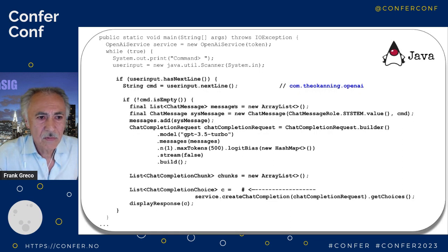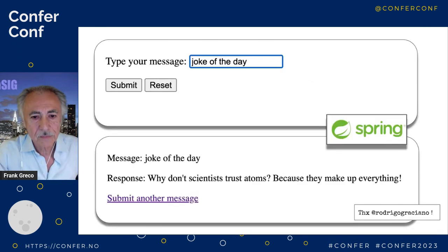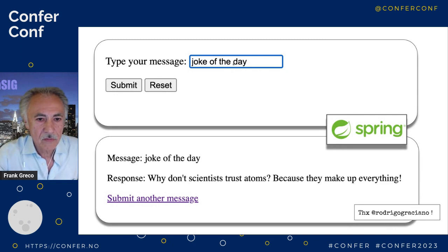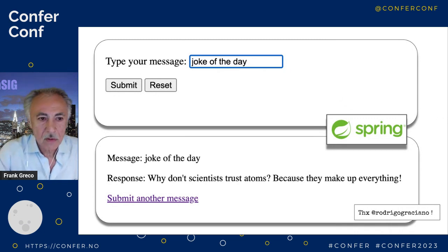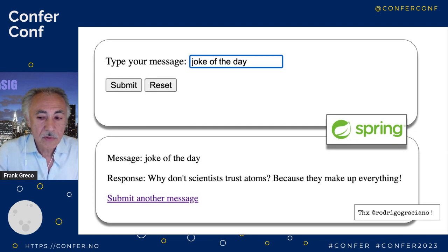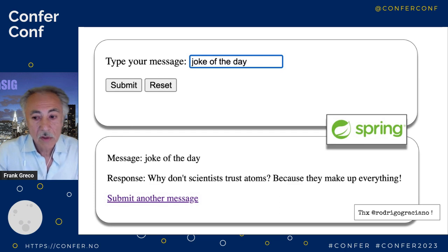Here's another Java version of a ChatGPT interface from the command line. Rodrigo Graciano, one of the New York Java SIG leaders, took some of my code and put it into Spring — a web interface in about 15 minutes. On the server side you can access OpenAI's ChatGPT through the API, and a user might ask questions of your corpus of data, your corporate documentation, and get answers. That's how you do it.